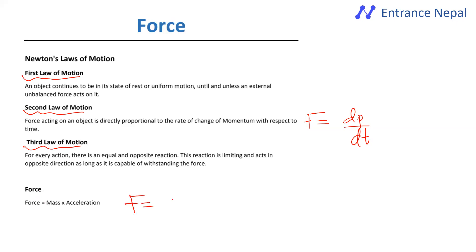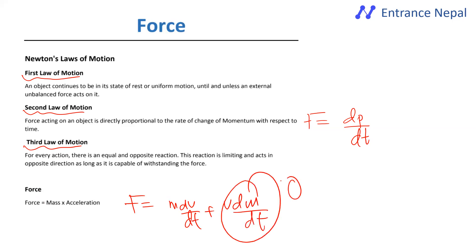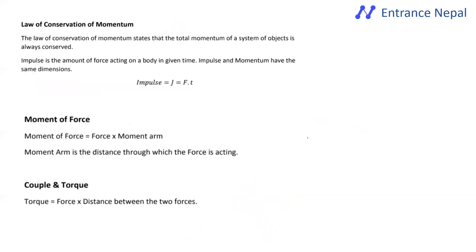From the definition of force: F = m(dv/dt) + v(dm/dt). If mass is constant, dm/dt = 0, so F = m(dv/dt) = ma. This is verified for constant mass, and from this we derive the law of conservation of momentum.